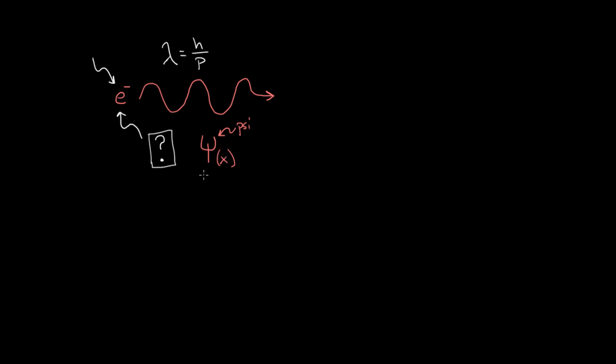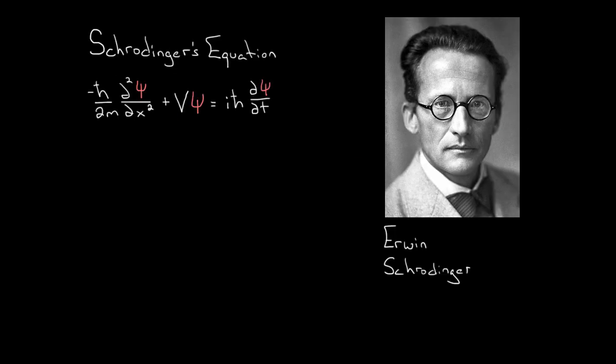But they also wanted to interpret it. What does this wave function even mean? So we've got two problems. We want a mathematical description of the wave, and we want to interpret what this wave even means. Now the person that gave us the mathematical description of this wave function was Erwin Schrödinger.